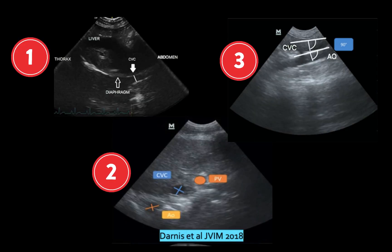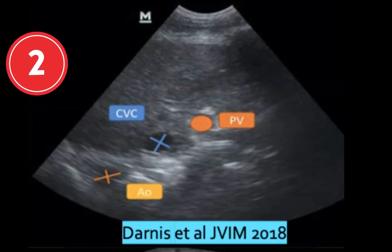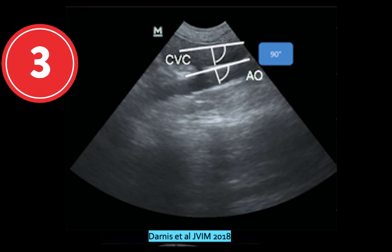There are three different locations where the caudal vena cava can be imaged with ultrasound: the subxiphoid view, the parasternal view, and the abdominal portion of the caudal vena cava, or CVC.